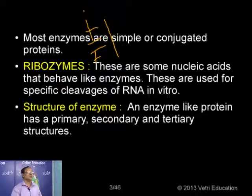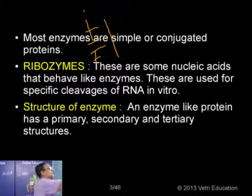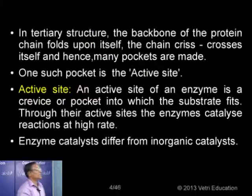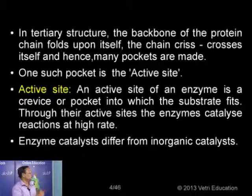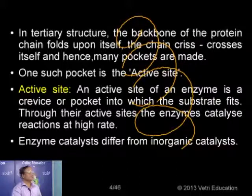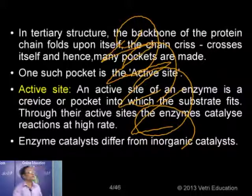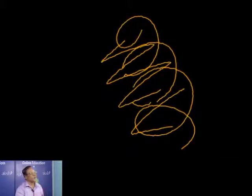An enzyme, like any protein, has a primary, secondary, or tertiary structure. In the tertiary structure, the backbone of the protein chain folds upon itself and the chain criss-crosses in a zigzag manner, so that we have a number of pockets or grooves formed.